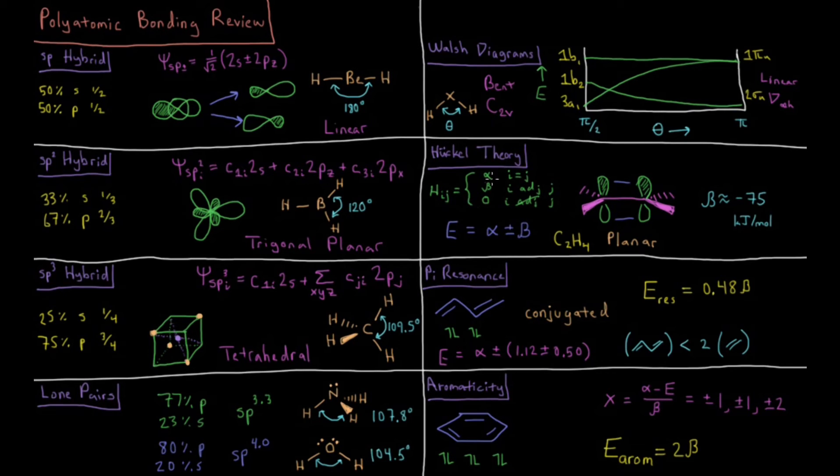Huckel theory defines the Hamiltonian matrix elements to be alpha, a parameter, if i equals j, so along the diagonal; defines them to be beta if i is next to j, like elements 1,2 and 2,1; or 0 if they are not adjacent. Applying Huckel theory, we get energies of E equals alpha plus or minus beta for the pi system of ethylene. Beta is an empirical parameter determined to be around minus 75 kilojoules per mole.